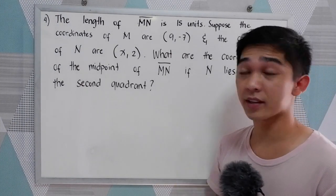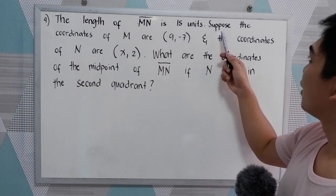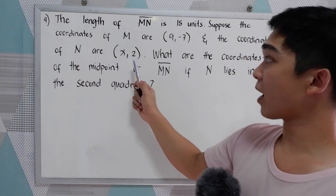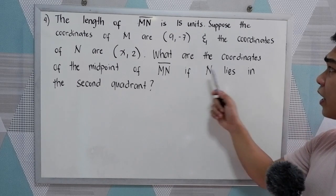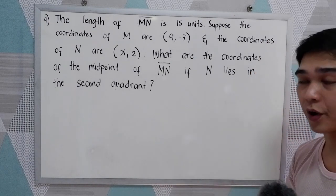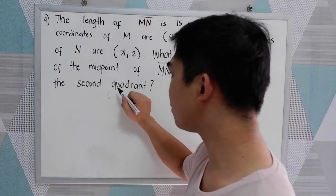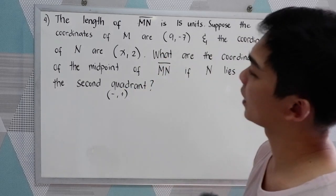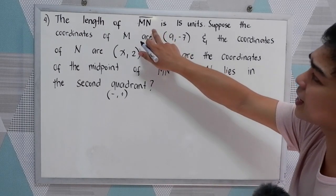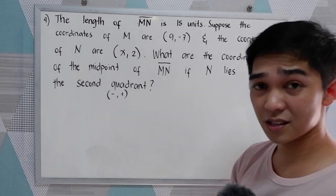Now our fourth example. The length of segment MN is 15 units. Suppose the coordinates of M are 9, negative 7, and the coordinates of N are x, positive 2. What are the coordinates of the midpoint of segment MN if N lies in the second quadrant? In the second quadrant, we have the sign negative for x and positive for y. Since we are given the length of 15 units, we are going to use the distance formula first.